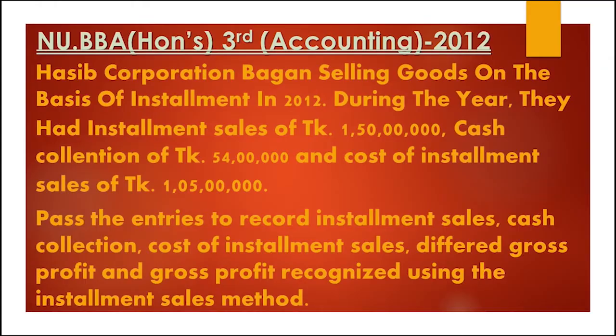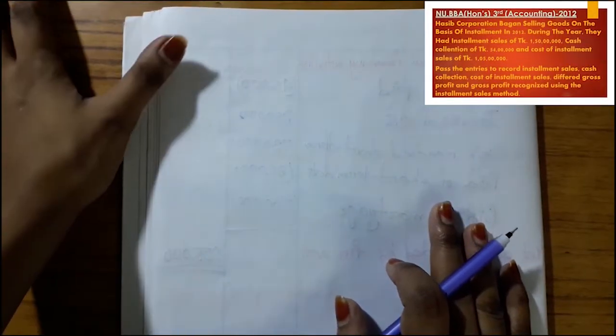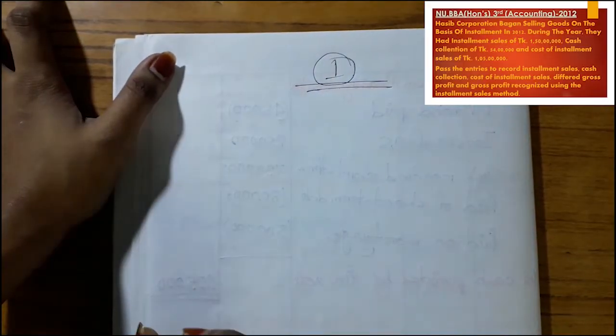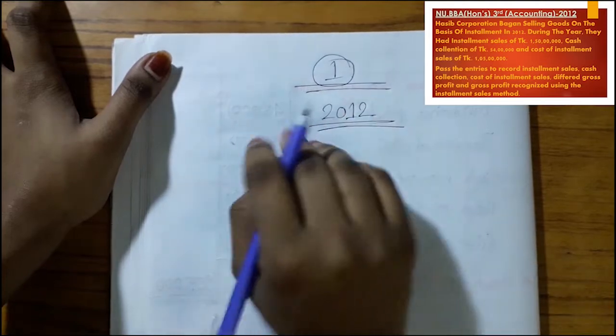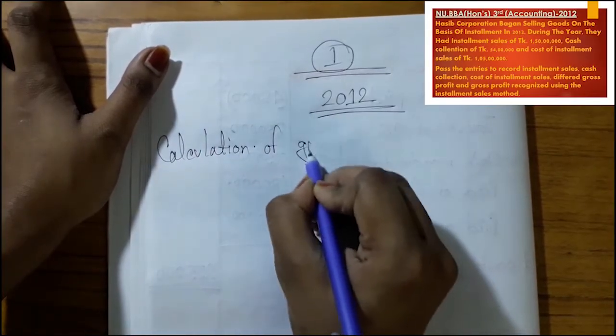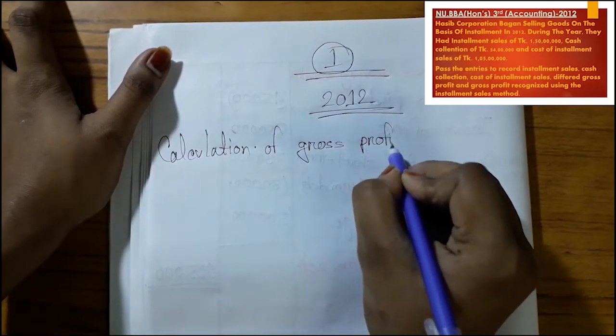So I will start with the solution. First, we calculate the gross profit rate. The gross profit rate calculation is for the year 2012.